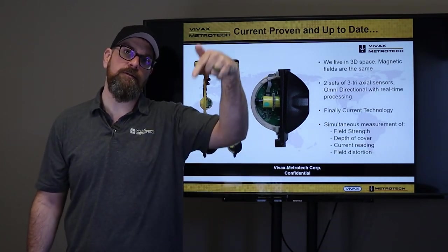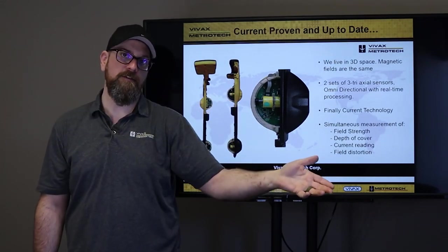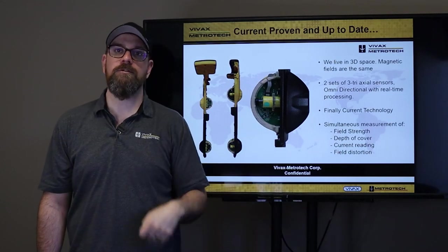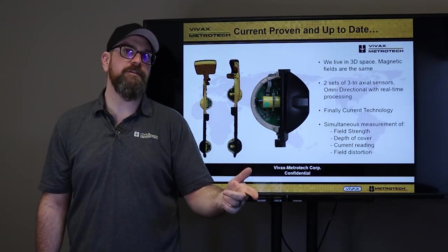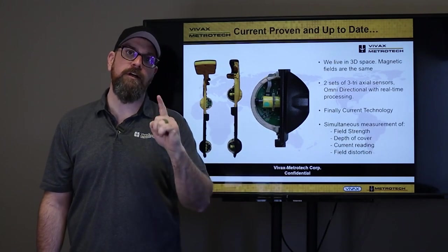Not only see in 3D directly below us, but see in 3D around the receiver, which gives us those other modes like plan view modes, offset locate, and allows us to have a color code to our bar graph to help with distortion.